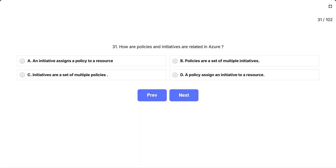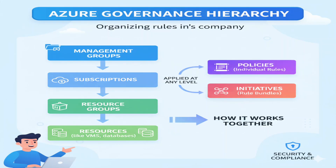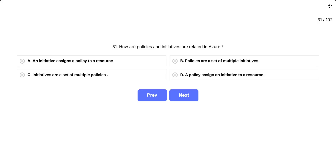Question 31: How are policies and initiatives related in Azure? This question is testing your knowledge of Azure's governance hierarchy. Think of it like organizing rules in a company. We need to understand how individual rules — policies — and rule bundles — initiatives — work together in Azure's management structure.